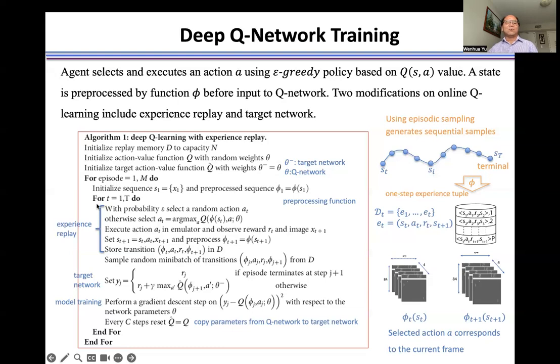So from when the agent interacts with the environment, it generates sequence samples, and then we generate the one-step experience for the replay buffer.